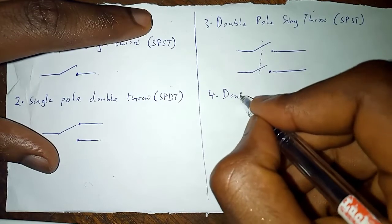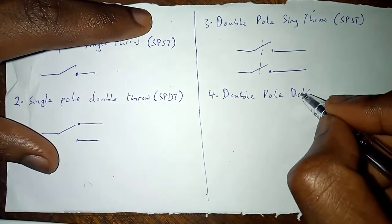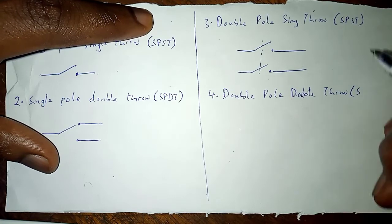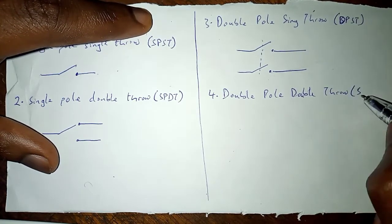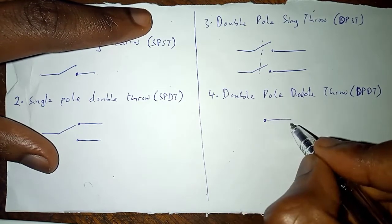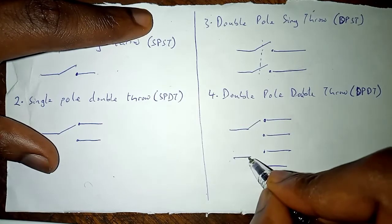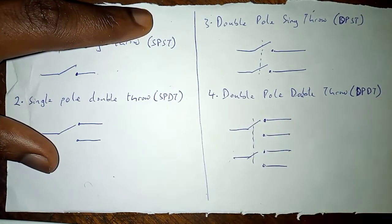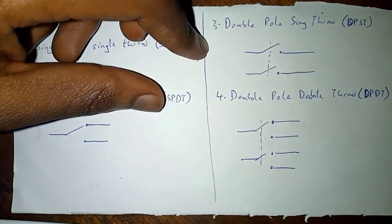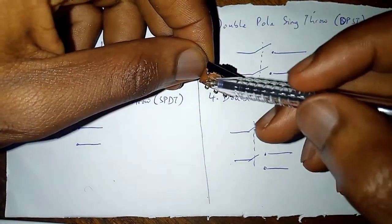Then we have a double pole, double throw, DPDT. So there are four throws, two pairs each for a pole, and a controller here. I have an example to show you here. Look at this: two poles, two pairs of throws on each side.